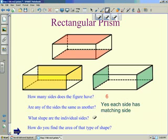What shape are these individual sides? Each side consists of a rectangle. And how do you find the area of a rectangle? By simply multiplying one of its dimensions by the other, normally length times width.